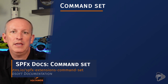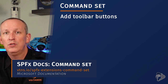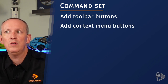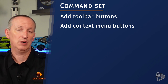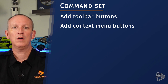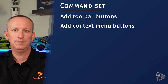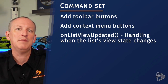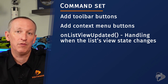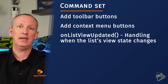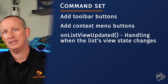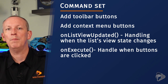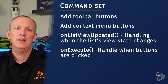Another type of extension is the command set. These enable developers to add buttons to the interface — specifically on list toolbars as well as the context menu on items inside of a SharePoint list. You control where the buttons appear when you register the button in the component's manifest file. You should be familiar with the API event onListViewUpdated, which is raised every time the state of the list view changes — for example, when a user selects an item, this method is raised and can enable the developer to change the visibility of a command set button. You should also know how to run custom logic when a button is clicked, as indicated by the onExecute event.